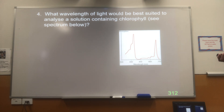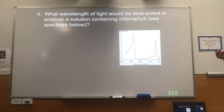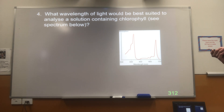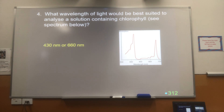To work out the best wavelengths to use, we use the absorption spectrum, which is a measurement of the amount of light absorbed at each wavelength. We use one of those peaks to work out the concentration — for chlorophyll it's going to be either the blue-violet end or the red end, so one of those two wavelengths: around 430 nm or around 660 nm.